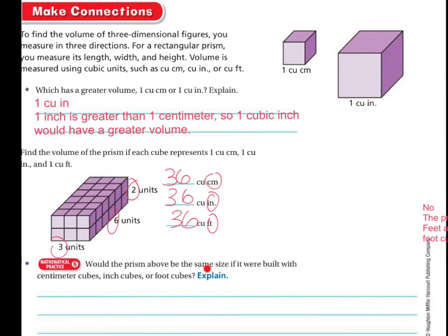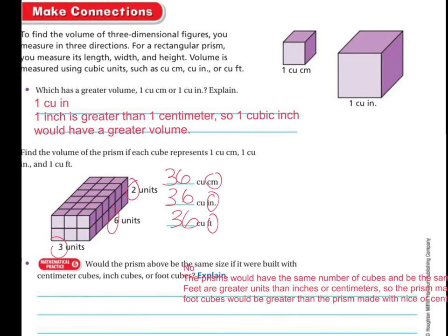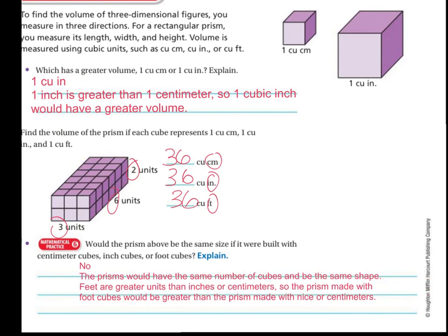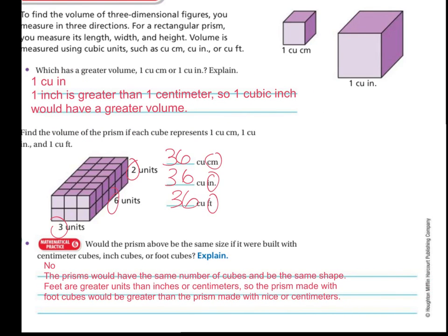So the question down here asks, would the prism above be the same size if you're built with centimeter cubes, inch cubes, or foot cubes? Well, the answer to that is, even though I have the same number, I'm not going to have the same size, because the prisms would have the same number of cubes and be the same shape. But feet is greater than inches or centimeters, and inches is greater than centimeters. So the prism made with the foot cubes would be greater than it would be made with centimeters. It's still going to be 36, but it's going to be a much larger shape.